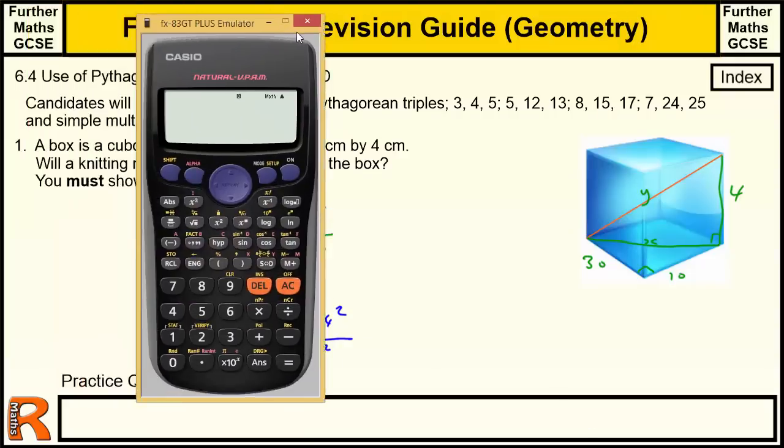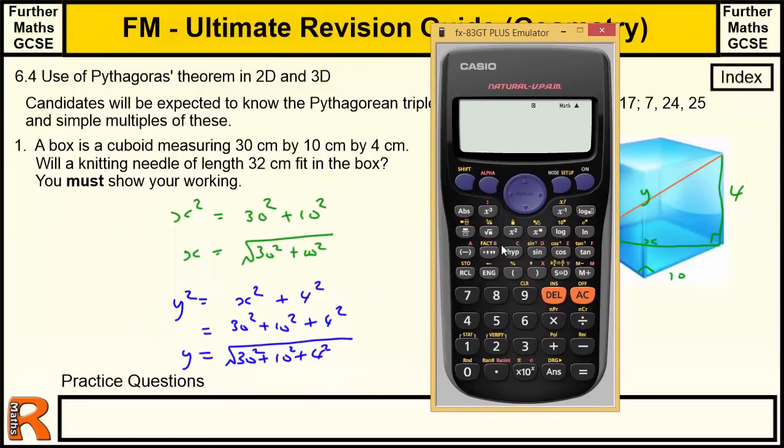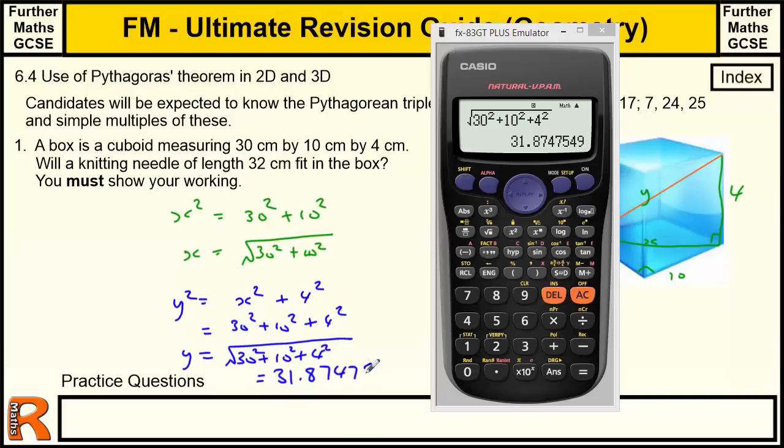So let's bring in the calculator. And do the square root of 30 squared plus 10 squared is 100, plus 4 squared is 16. And we get this value here, 31.8747549.